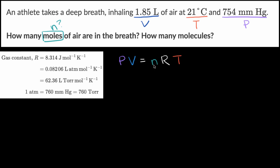So we just need to solve for n. To solve for n, you just divide both sides by RT. And so you are going to get that n is equal to pressure times the volume over R times T.